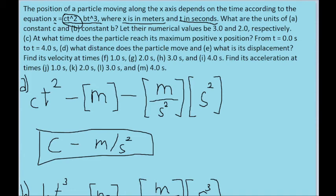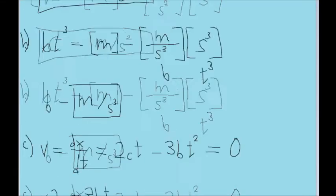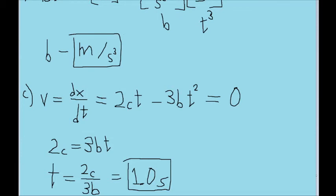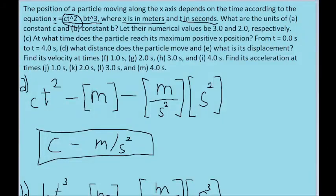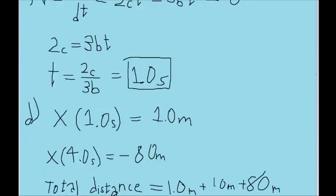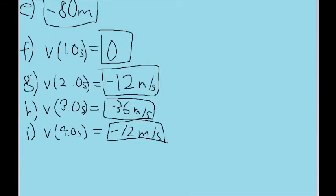Parts F, G, H, and I are all kind of redundant with each other, since they basically ask the same simple thing. Just define the velocity at these specific times. Now way back in part C, we already found a function for the particle's velocity by taking the derivative of the position function. All we need to do for these next four parts is to take this exact formula and just plug in the different values for T, using the same constants, 3.0 and 2.0. If you do this properly, you should get 0 meters per second for 1 second, negative 12 meters per second for 2.0 seconds, negative 36 meters per second for 3.0 seconds, and negative 72 meters per second for 4.0 seconds.